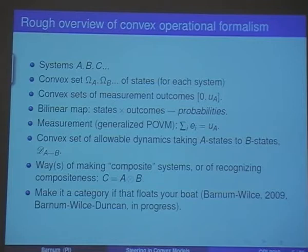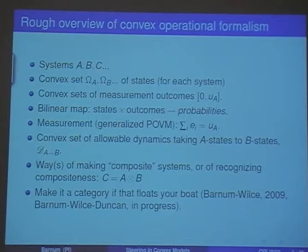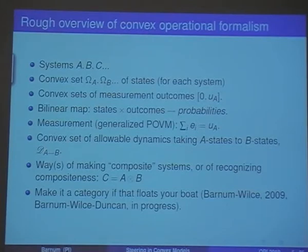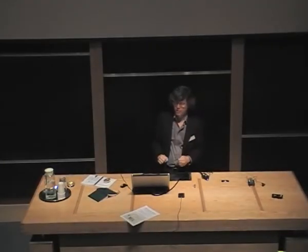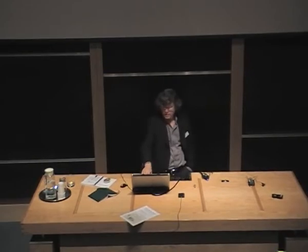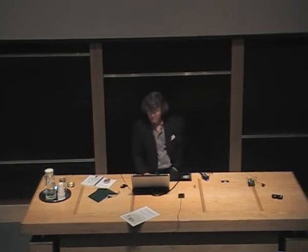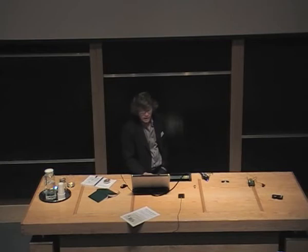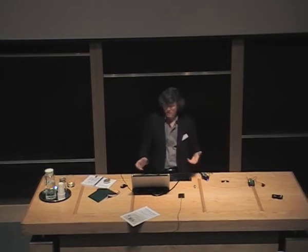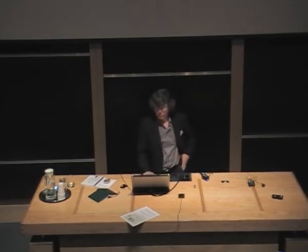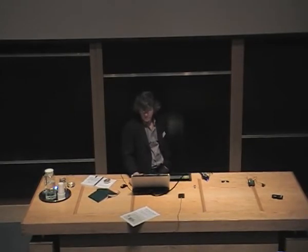For those who weren't here yesterday, a very quick review of the operational formalism in quantum theory that I'm going to work with. We have different systems — each has a convex set of states and a convex set of measurement outcomes. These measurement outcomes are basically linear functionals on the state space. These convex sets are embedded as a base of a cone of unnormalized states — all non-negative multiples of a normalized state. A measurement is a set of outcomes that add up to the unit outcome, which gives one whenever measured on any normalized state. We also describe a convex set of lateral dynamics that can't take you out of state space, and ways of making composite systems.